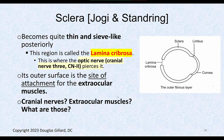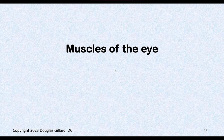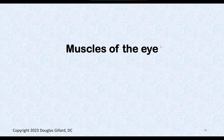Now let's talk about the extraocular muscles — these attach to the sclera and are visible in cadaver lab. There are intrinsic muscles (sphincter and dilator pupillae, already covered) and extrinsic or extraocular muscles. You must know these muscles — boards heavily test them.